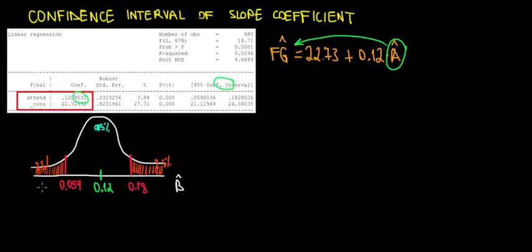We have the coefficient given in our Stata table over here and we're also given the 95% confidence interval. I draw here on the graph how it looks like. The confidence interval ranges from 0.059 until 0.18. What does this tell us?